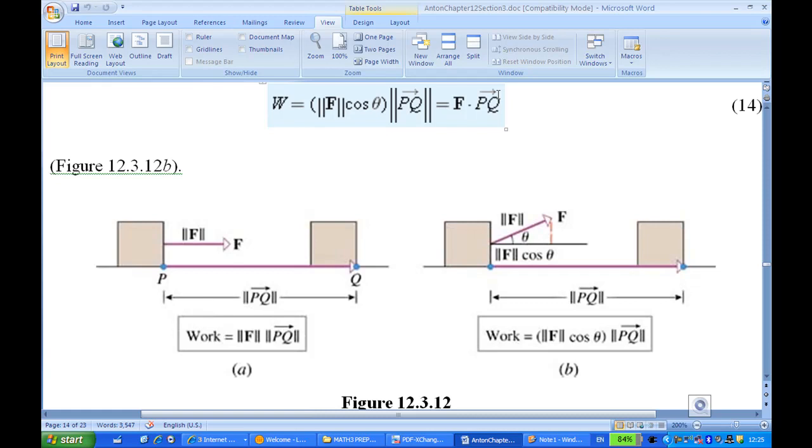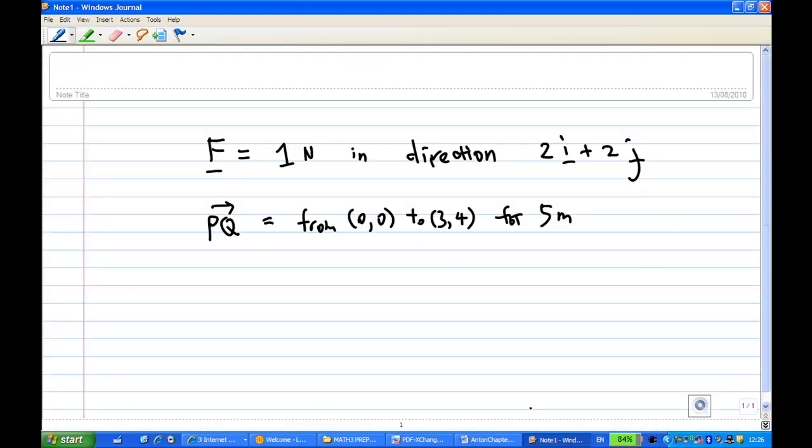So in this case, our force is 1 N in the direction of 2i plus 2j, and the displacement is PQ from (0,0) to (3,4) for 5 meters.